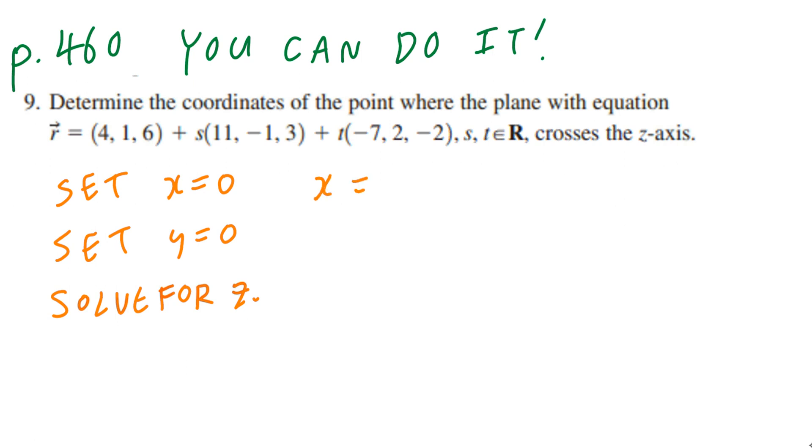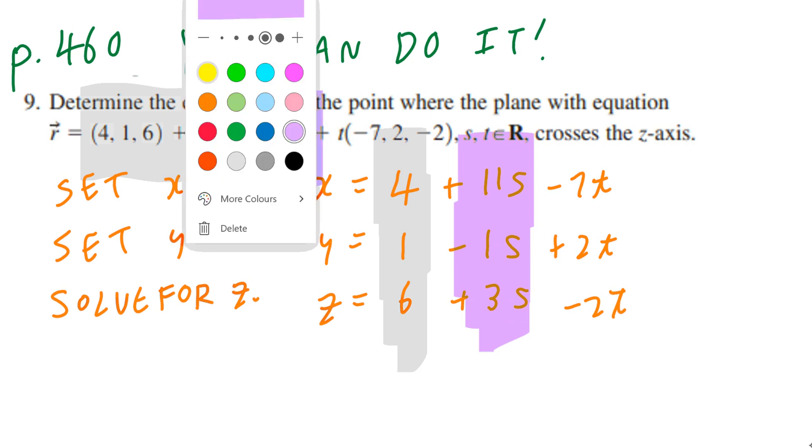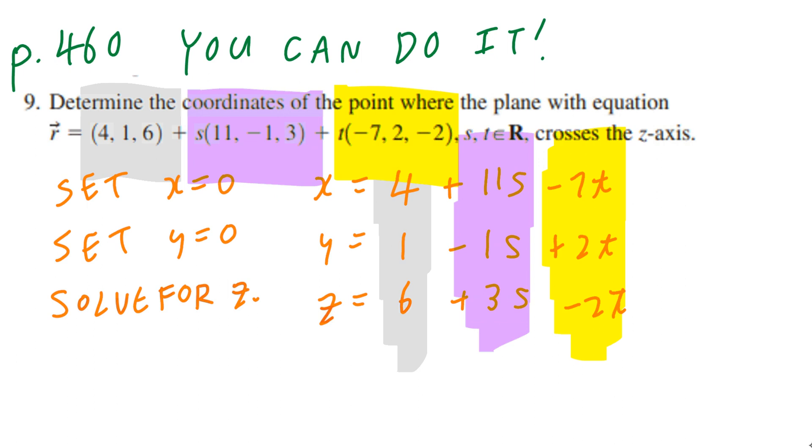Now look what happens. If I go from the given vector form to parametric form, the first number (4,1,6), the first row becomes the first column: 4 plus 11s minus 7t. This second part becomes the second column: 1 minus s plus 2t. And if I continue, it will be 6 plus 3s minus 2t. You should write down s and t are elements of real numbers.